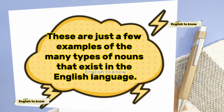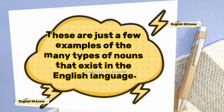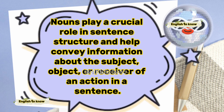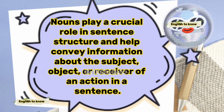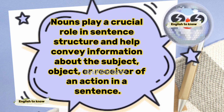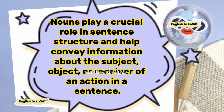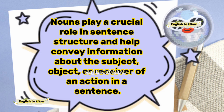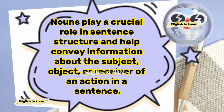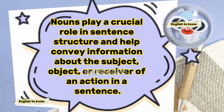These are just a few examples of the many types of nouns that exist in the English language. Nouns play a crucial role in sentence structure and help convey information about the subject, object or receiver of an action in a sentence.